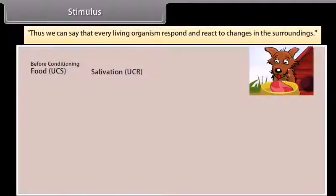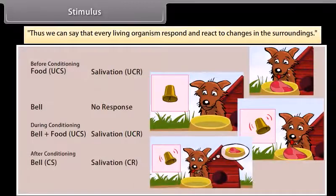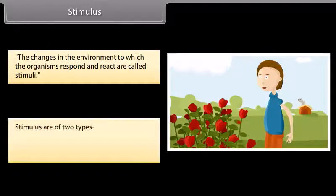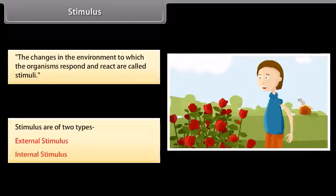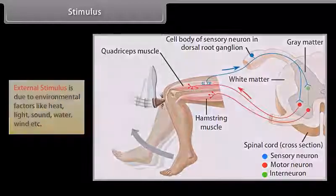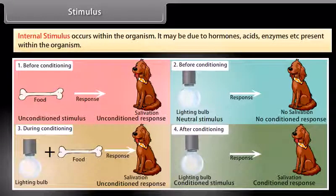Every living organism responds and reacts to changes in the surroundings. The changes in the environment to which the organisms respond and react are called stimuli. Stimulus are of two types: external stimulus and internal stimulus. External stimulus is due to environmental factors like heat, light, sound, water, wind, etc. Internal stimulus occurs within the organism and may be due to hormones, acids, enzymes, etc. present within the organism.